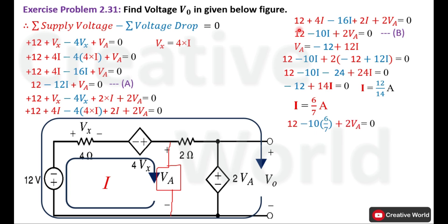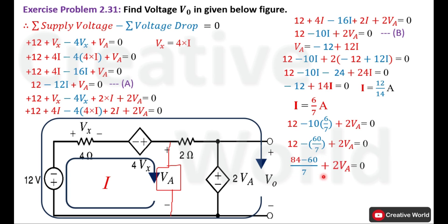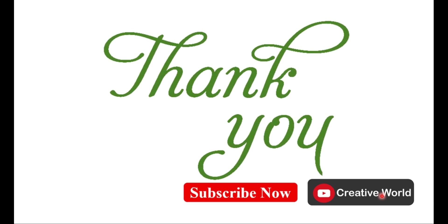Place the value of current i into equation B: 12 minus 10 multiplied by 6 over 7 plus 2Va equals 0. 10 multiplied by 6 gives 60 over 7. Taking the LCM, 7 multiplied by 12 gives 84, so the equation becomes 84 minus 60 over 7 plus 2Va equals 0. Subtracting 60 from 84 and placing the result on the other side gives 2Va equals minus 24 over 7. Since 2Va equals V0, the value of V0 is minus 24 over 7. This was exercise problem number 2.31. Thank you, see you in the next video.